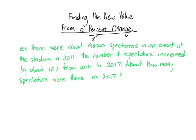There were about 198,000 spectators at an event in the stadium in 2011. The number of spectators increased by about 12% from 2011 to 2017. About how many spectators are there in 2017? This question is a typical example of one that gives you more information than you need. You don't need to know how much time has passed or when it happened. All you need to know is you're going to take 198,000 and increase it by 12%.